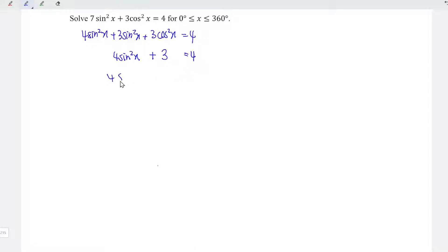Which means that we should have 4 sin squared x, positive 4 move over to the left. Positive becomes negative. So 3 minus 4 is equal to negative 1, and this is equal to 0.